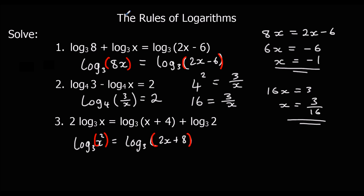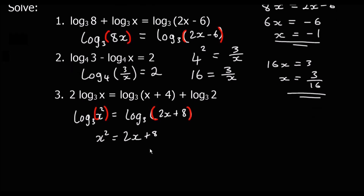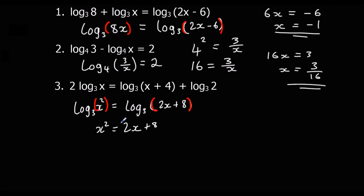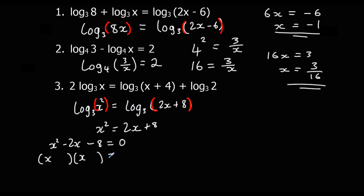With log base 3 on both sides, x squared equals 2x plus 8. Rearranging to zero: x squared minus 2x minus 8 equals 0. Factorizing — what multiplies to make minus 8 and adds to make minus 2 — gives (x minus 4)(x plus 2) equals 0, so x equals 4 or x equals minus 2.